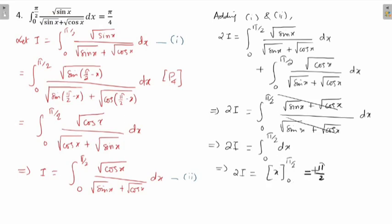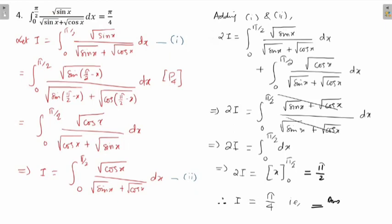Adding equations 1 and 2: on the left side we get 2I. On the right side, both integrals have limits 0 to π/2 and the same denominator, so we combine them. The numerators add: √(sin x) + √(cos x) over √(sin x) + √(cos x) = 1. So 2I = ∫₀^(π/2) dx = [x]₀^(π/2) = π/2. Therefore I = π/4. Pause the video and note down your solution.